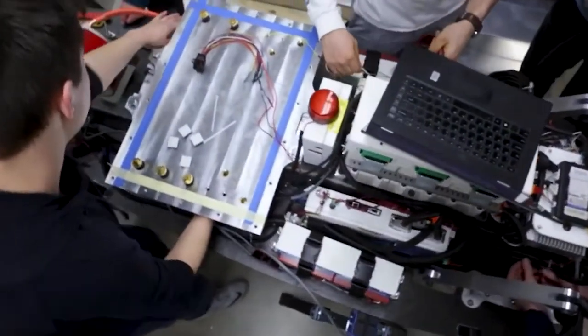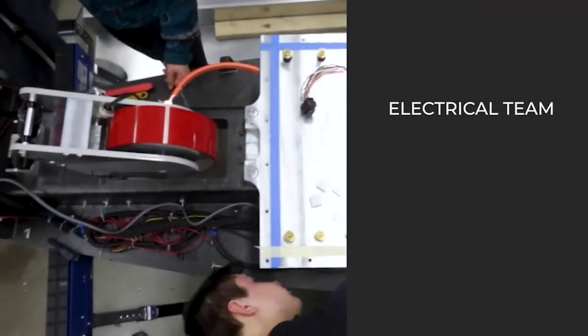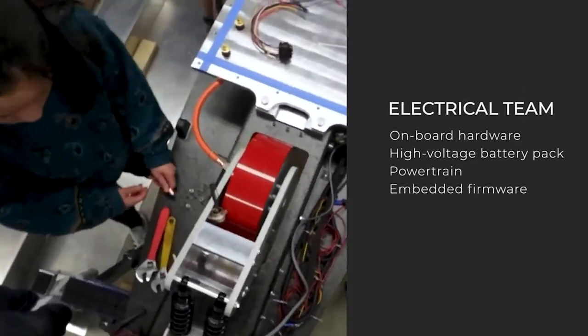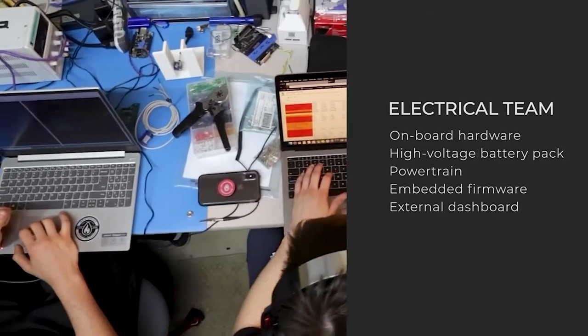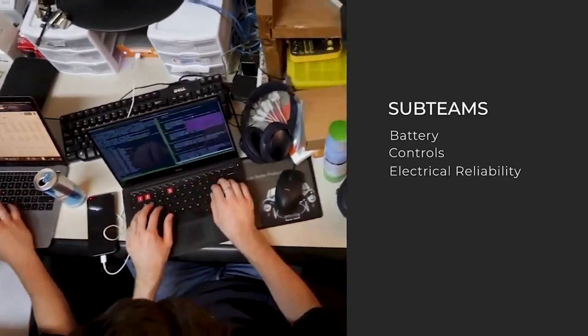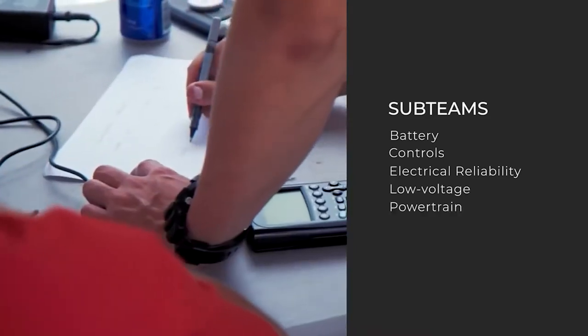The electrical team is responsible for designing and integrating the pod's onboard hardware, high voltage battery pack, powertrain, embedded firmware, and external dashboard. Electrical sub-teams include battery, controls, electrical reliability, low voltage, powertrain, and software.